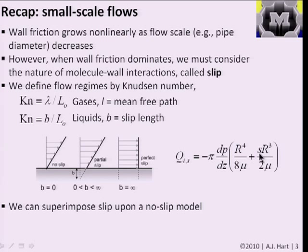We closed by discussing the molecular origin of slip. We consider that molecules in the fluid and in the wall feel each other, determined by their interactions—analogous to how we thought about Van der Waals forces for simple geometries. Surface roughness can also matter: if the surface is rough, the effective contact between the fluid and the wall may differ from the smooth case.